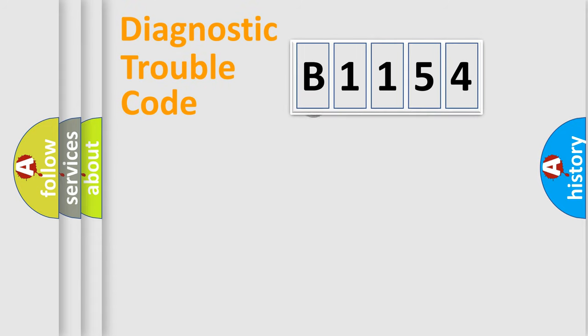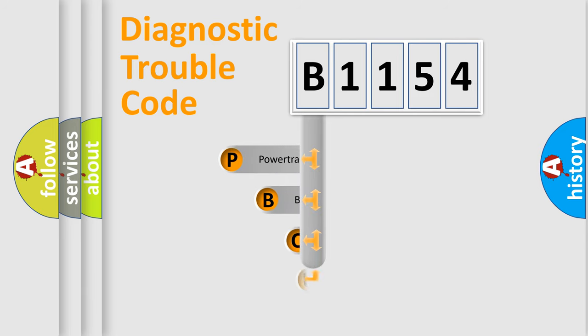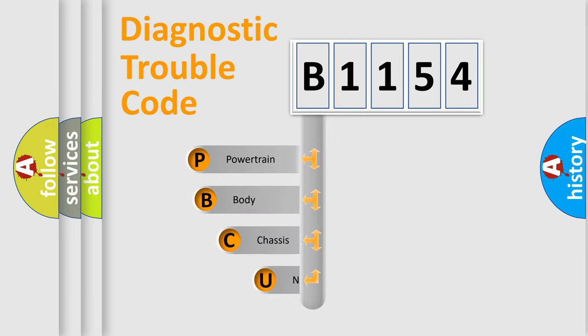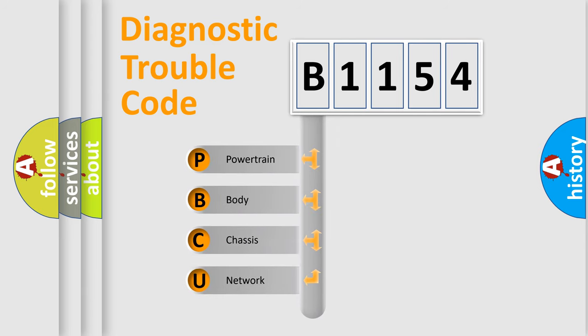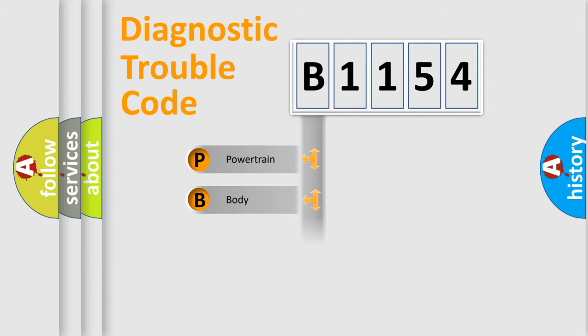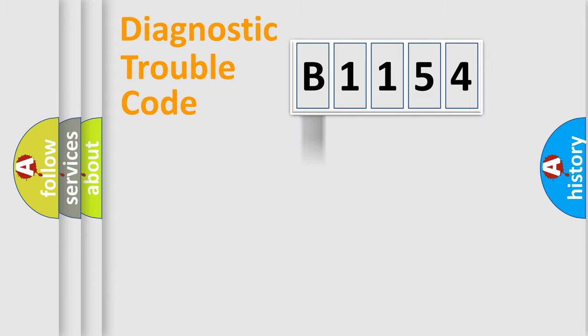Let's do this. First, let's look at the history of diagnostic fault code composition according to the OBD2 protocol, which is unified for all automakers since 2000. We divide the electric system of automobile into four basic units: Powertrain, Body, Chassis, and Network.